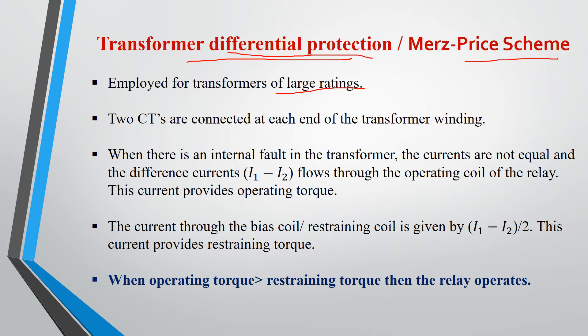The current flowing in the restraining coil will provide the restraining torque. The relay will operate when the operating torque is greater than the restraining torque.